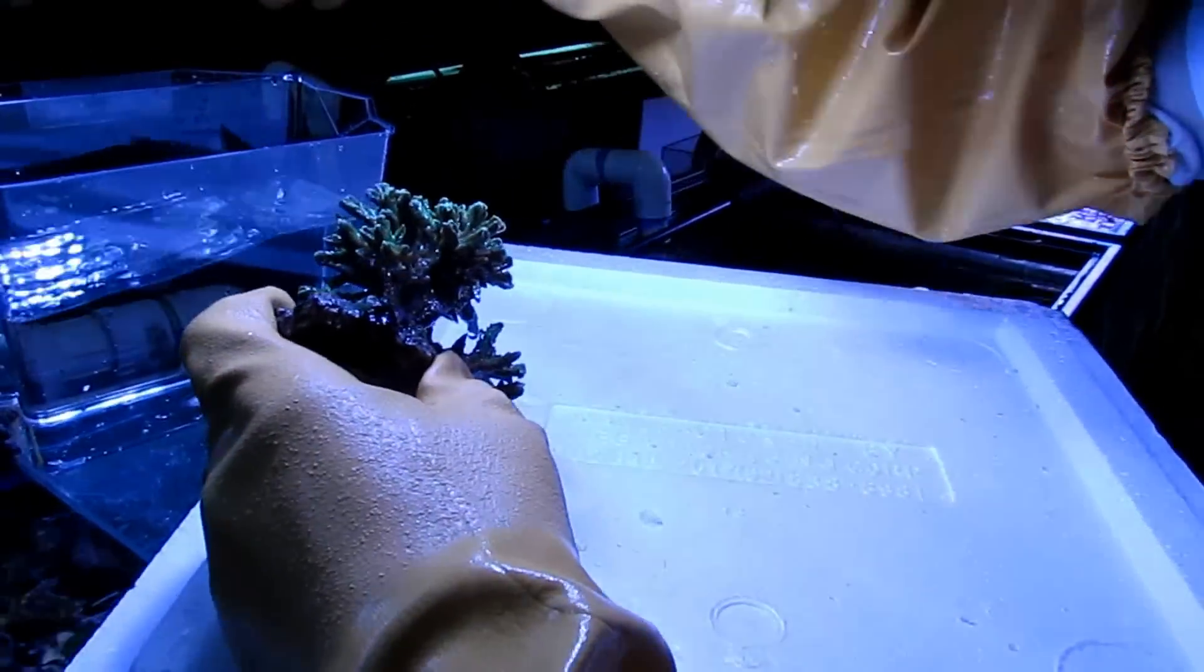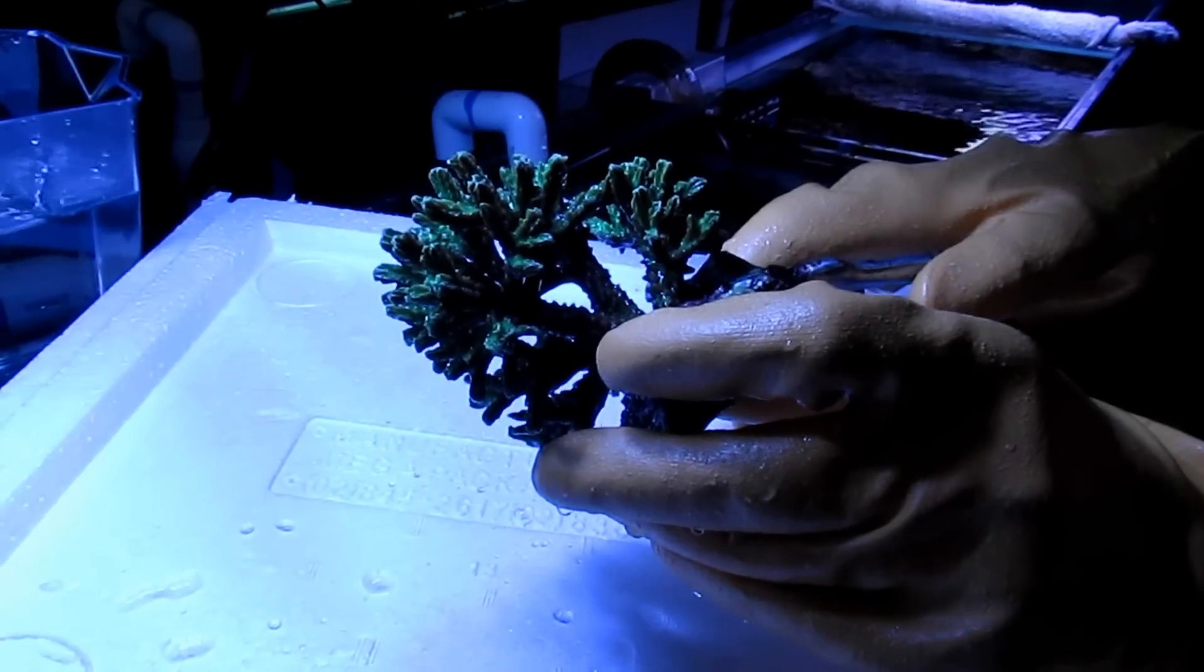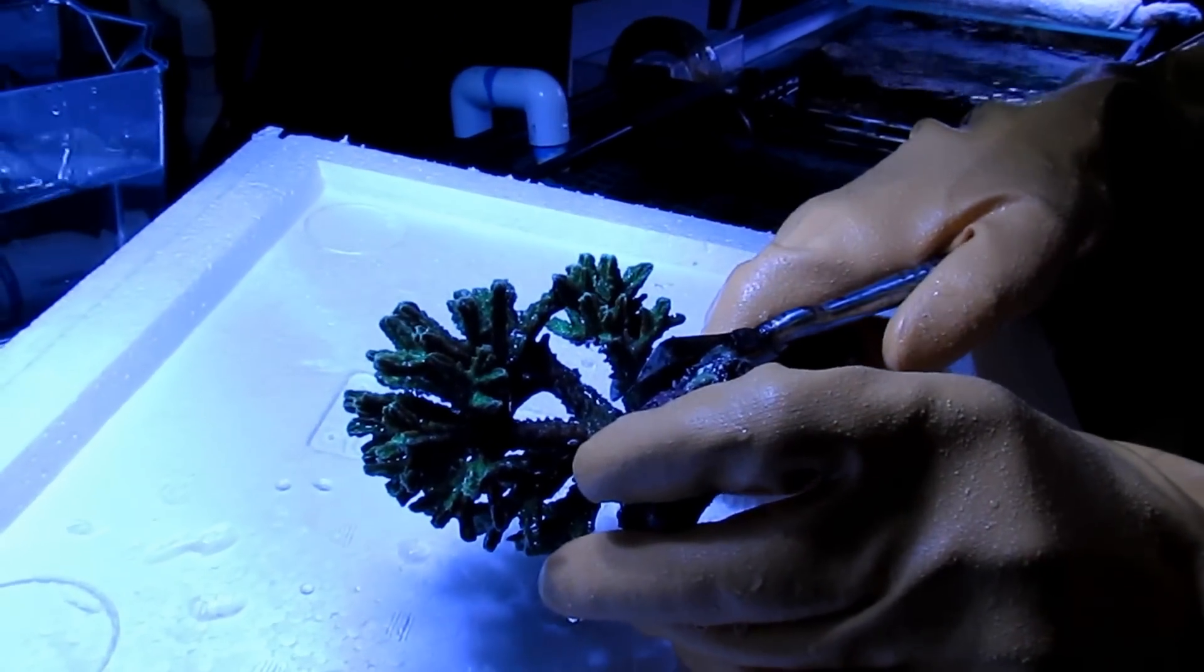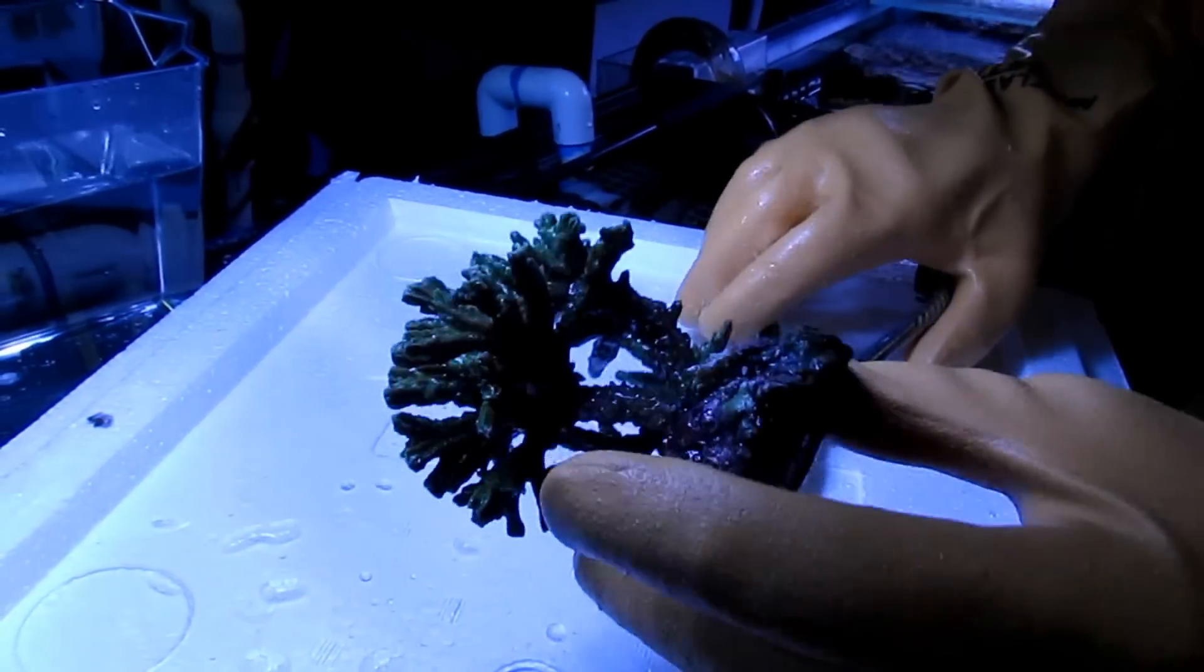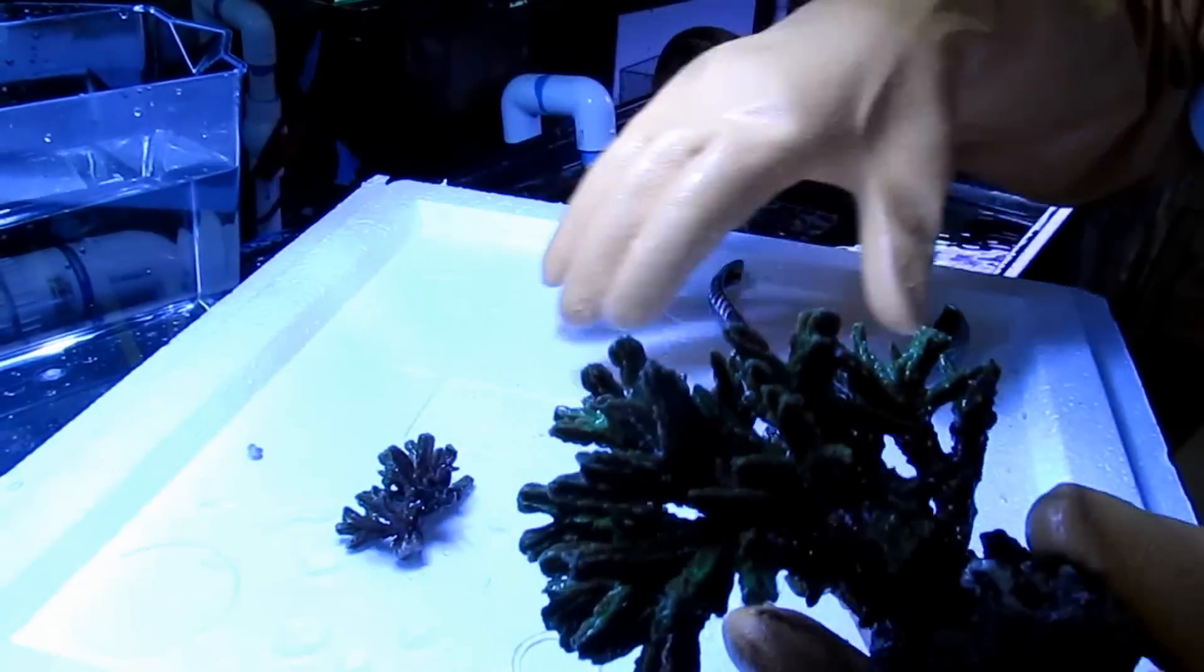Now what you want to do is get your coral clippers, whether it be a bandsaw, coral clippers, or whatever it may be, and go to the lowest point. Try to make it flat so when you do remount them, you can mount that flat piece on whatever it may be, the rock or a frag plug.